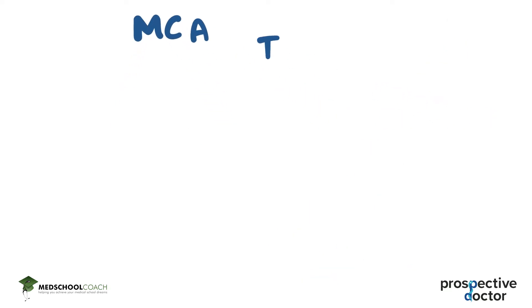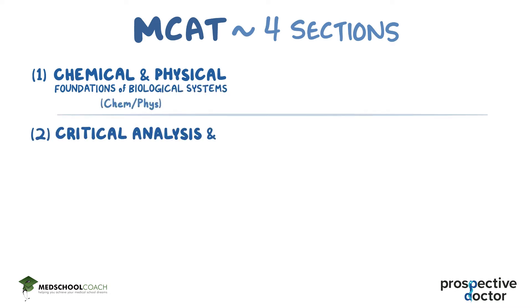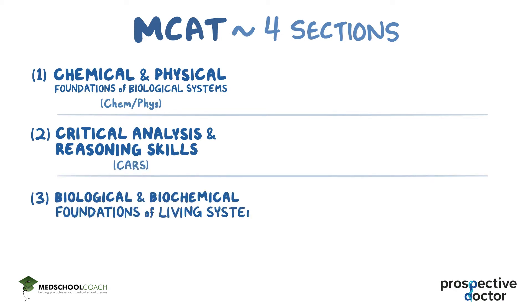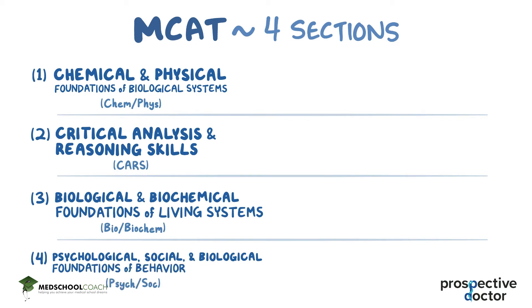The MCAT itself has four sections: Chemical and Physical Foundations of Biological Systems, or Chem-Phys for short; Critical Analysis and Reasoning Skills, or CARS for short; Biological and Biochemical Foundations of Living Systems, or Bio-Biochem for short; and lastly, Psychological, Social, and Biological Foundations of Behavior, or Psych-Soci for short.